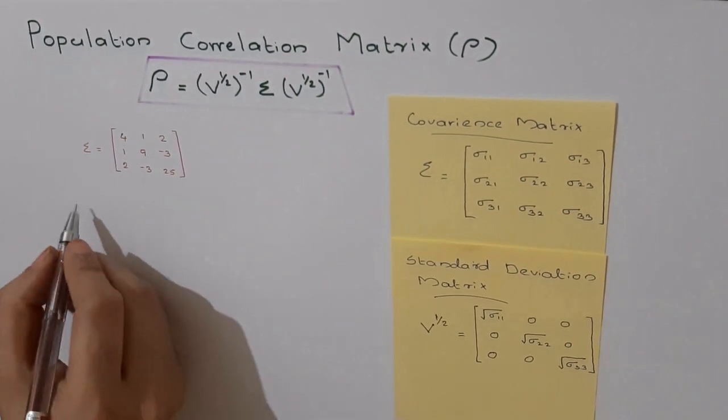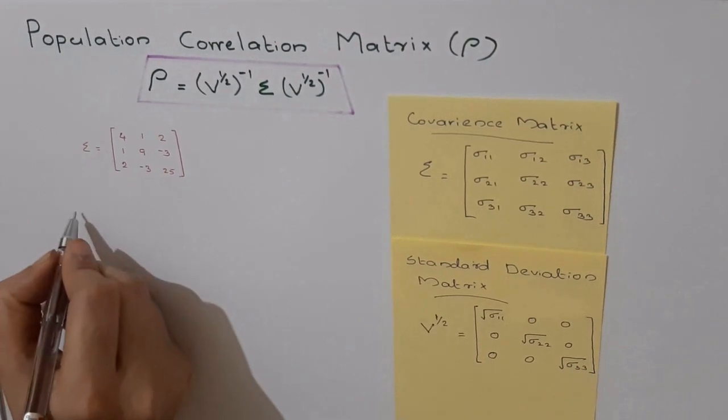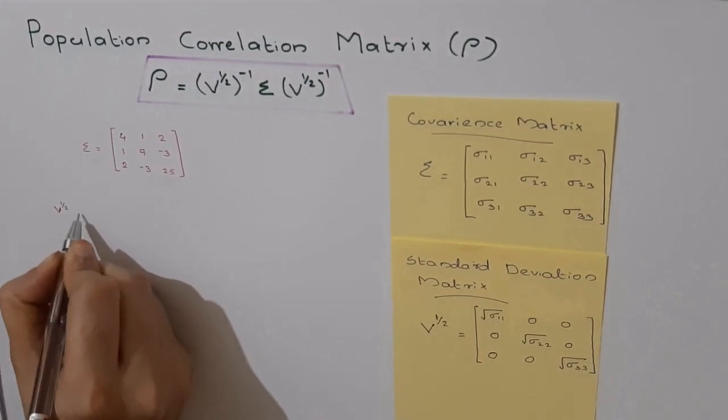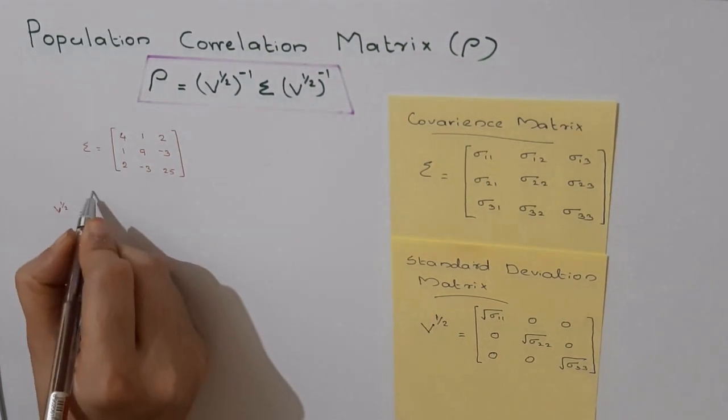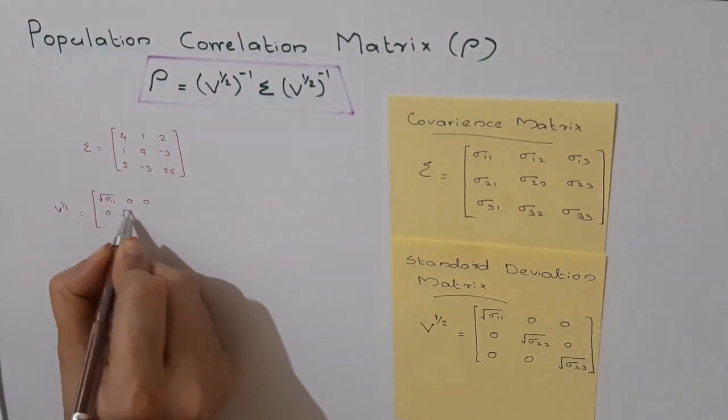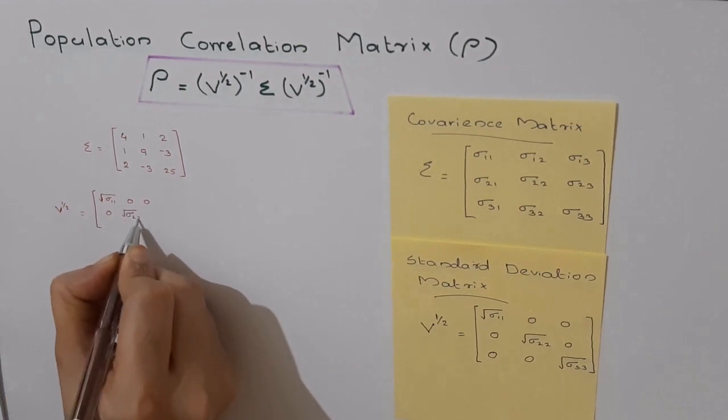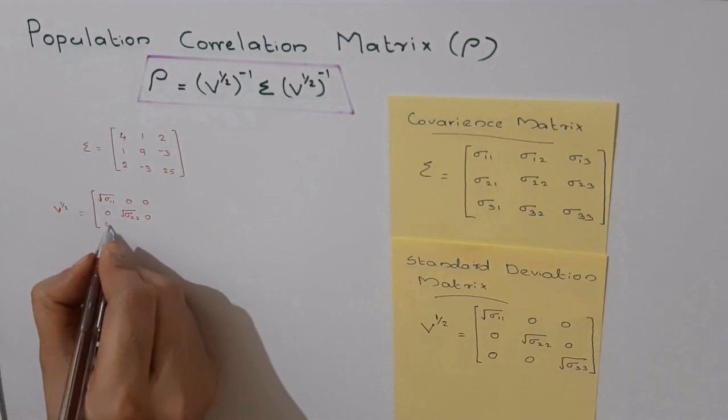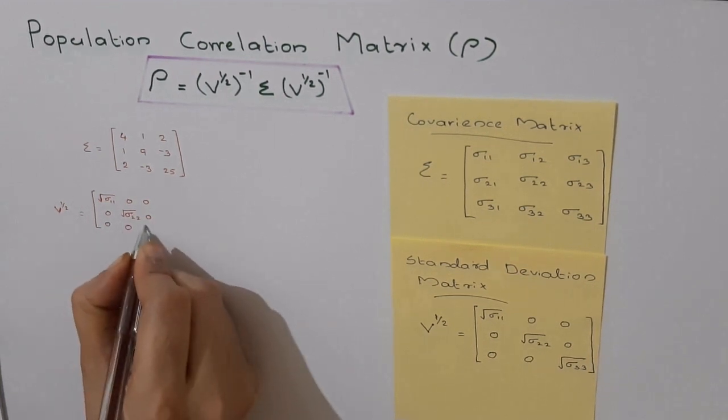What is V^(1/2)? We have the standard deviation matrix: [√σ₁₁, 0, 0; 0, √σ₂₂, 0; 0, 0, √σ₃₃].